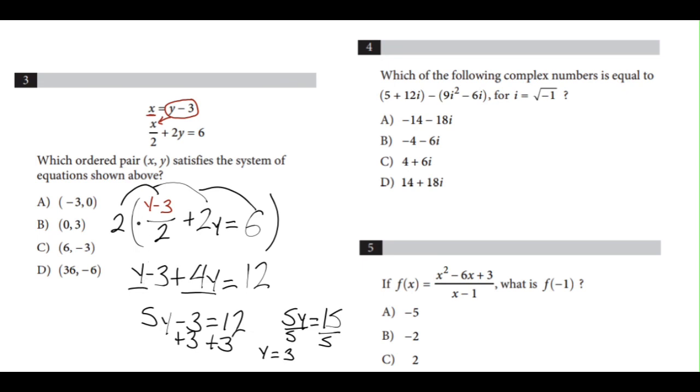So if y equals 3, and we look at our answer choices, only one of them has the y value as 3, which is answer choice B.